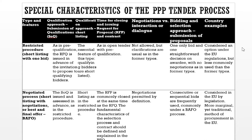Restricted Procedure — Shortlisting with One Bid: The RFQ is issued in advance of the invitation to propose to qualifying bidders; the essential feature is that qualifying bidders are shortlisted. Time for issuing the RFP and contract is as in the open tender with pre-qualification. Negotiation is not allowed, but clarifications are usual. Bidding and selection: only one bid and one straightforward decision on awardee with no negotiation. Country examples: considered an option under EU regulations, but less commonly used than the open tender formats.